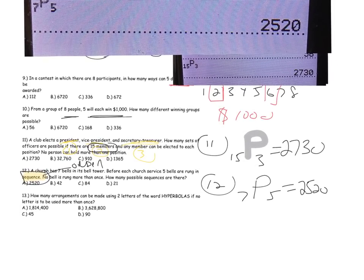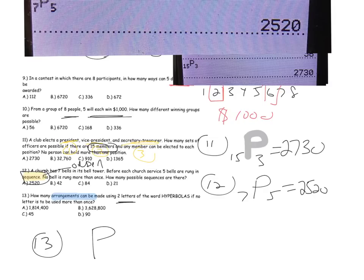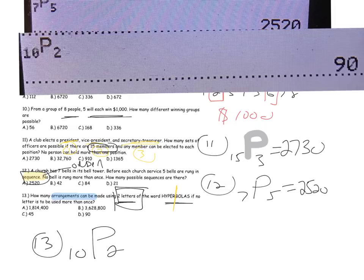Problem thirteen: how many arrangements can be made using two letters of the word HYPERBOLAS? Arrangements means to put in order, so this is a permutation. How many letters are in HYPERBOLAS? There are 10. So we have 10 letters making arrangements of two: 10P2, or 90.